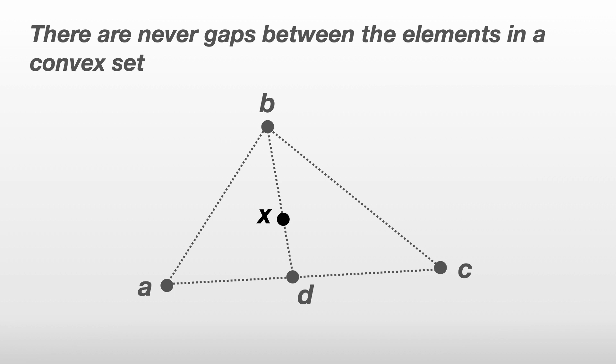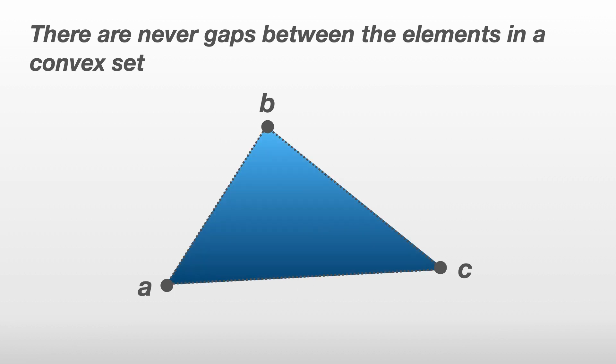Now, x wasn't special. We could have chosen any point within this shape, and so we've shown that all points within these lines must also be in the set.